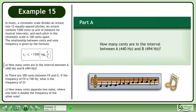In music, a chromatic scale divides an octave into 12 equally spaced pitches. An octave contains 1200 cents, a unit of measure for musical intervals, and each pitch in the chromatic scale is 100 cents apart. The relationship between cents and note frequency is given by the formula c2 minus c1 equals 1200 times the base 2 logarithm of f2 over f1.